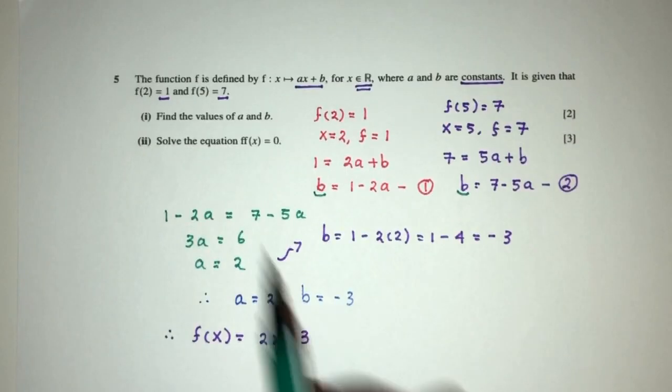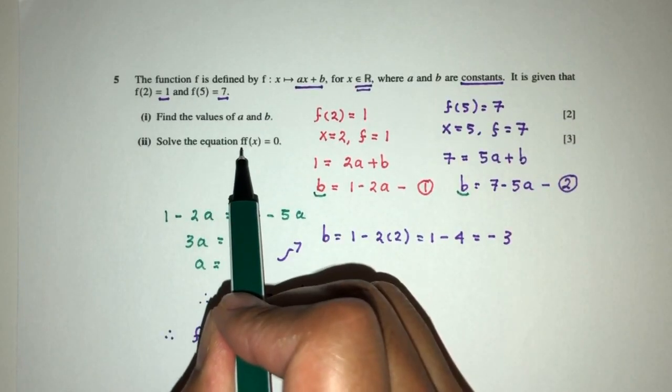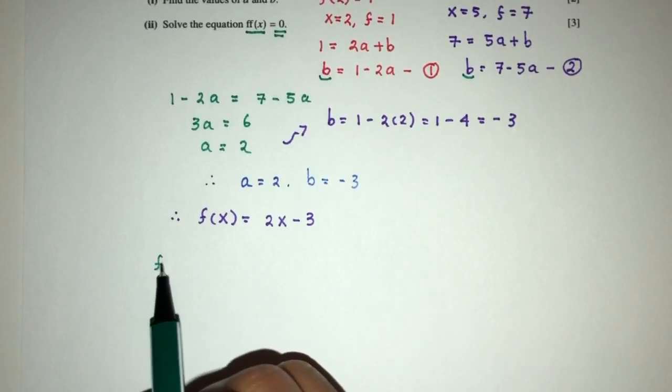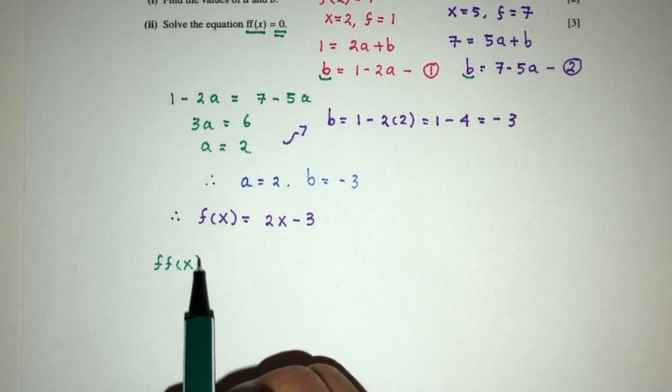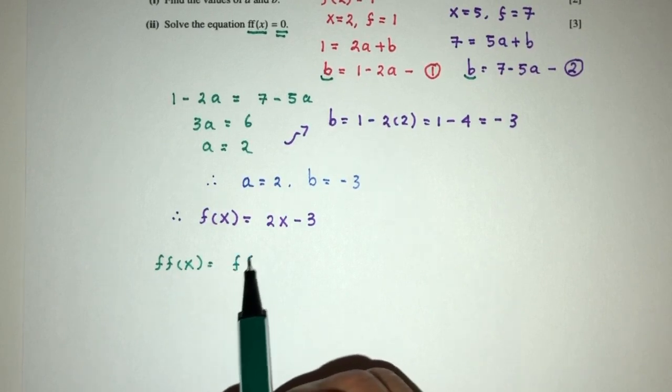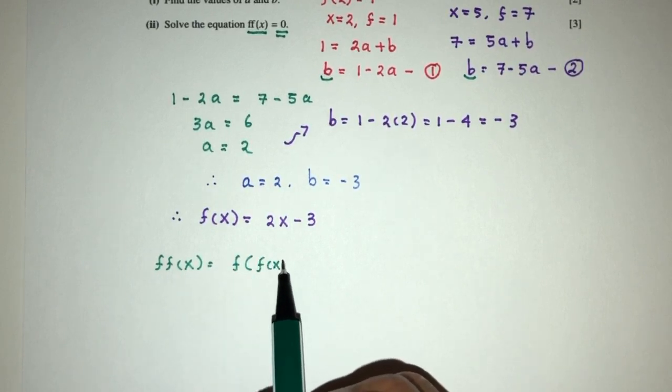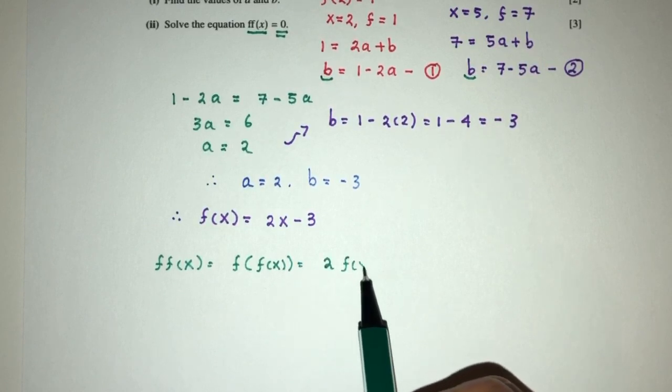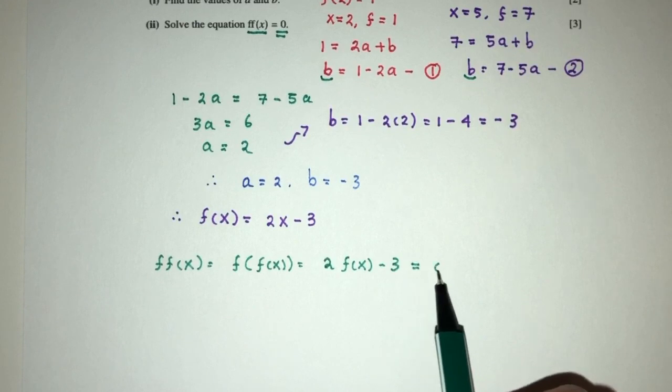Now part 2, we have to solve the equation f(f(x)) equal to 0. So pretty easy. Let's write this down. f(f(x)) is what? It is simply f of f(x), which means there will be 2 f(x) minus 3, equal to 0.